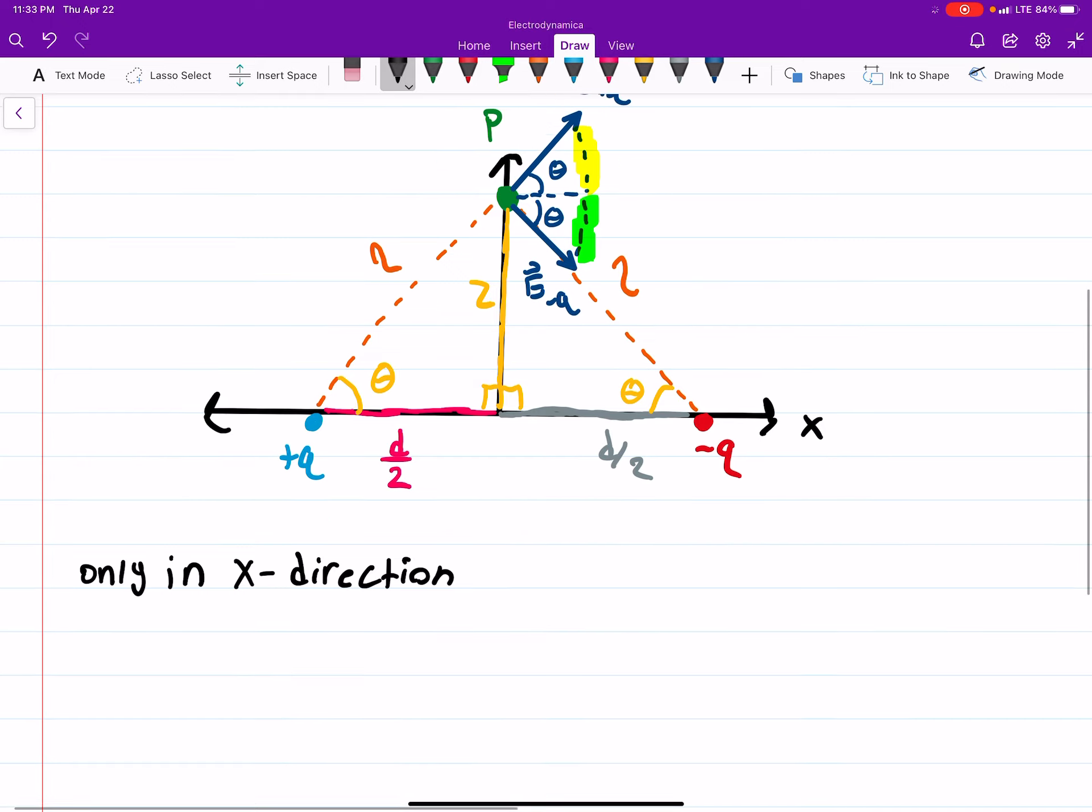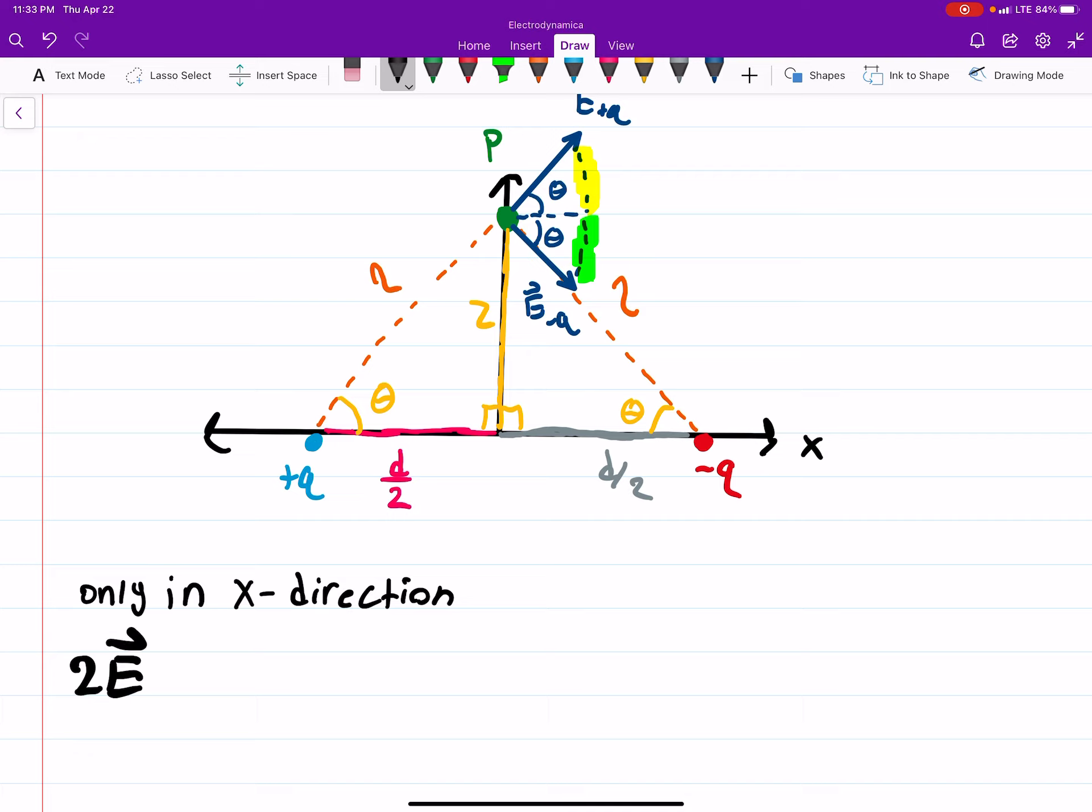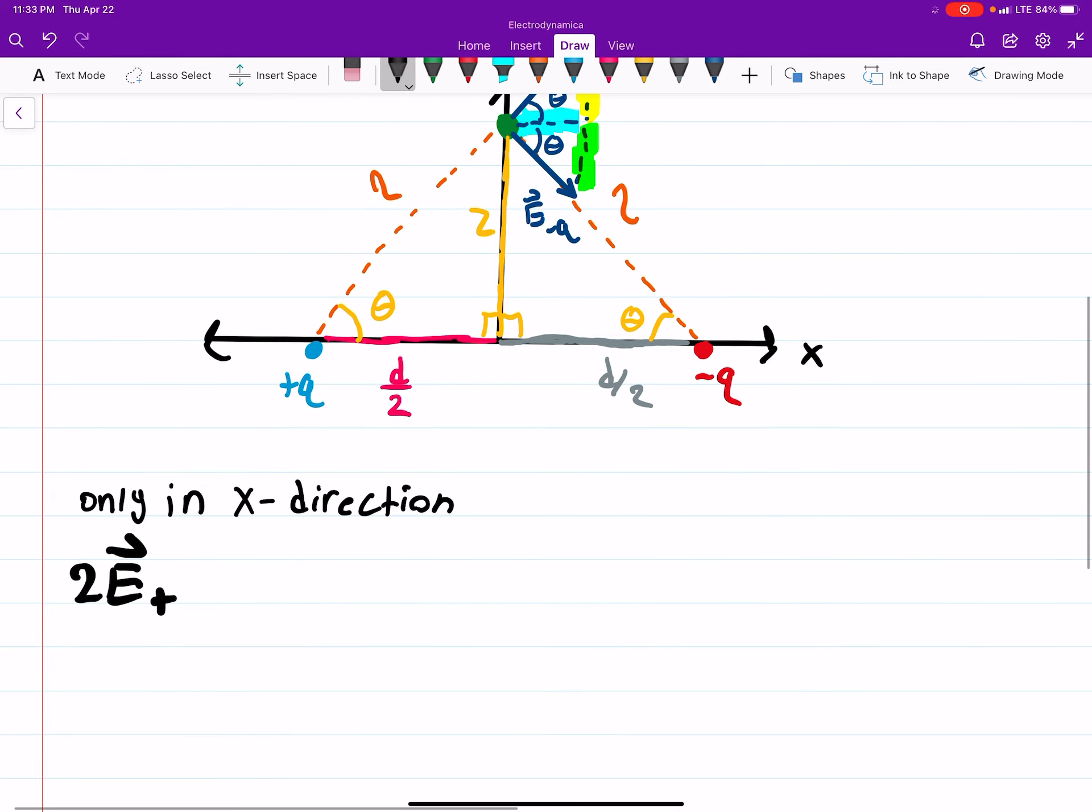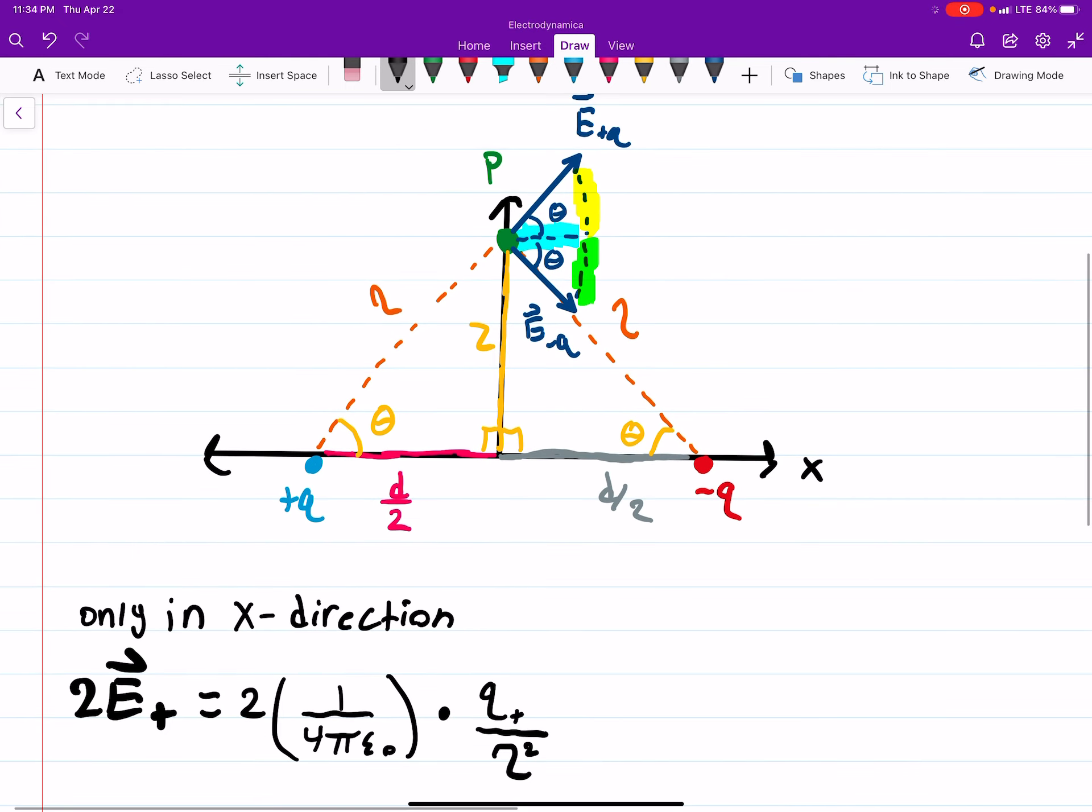So what we really want is we can say, two times the e field of, say, the plus charge. So basically, this part that I'll be highlighting in light blue, we're finding the e field there, multiplying it by two to account for the fact that you also have the negative charge, which is contributing an equal amount in the x direction. So that's going to be two times one over four pi epsilon naught, times the charge, over script R squared. And again, we only want the x direction. So if we look at our right triangles up here, that'll be cosine theta. And this is in the i hat direction.